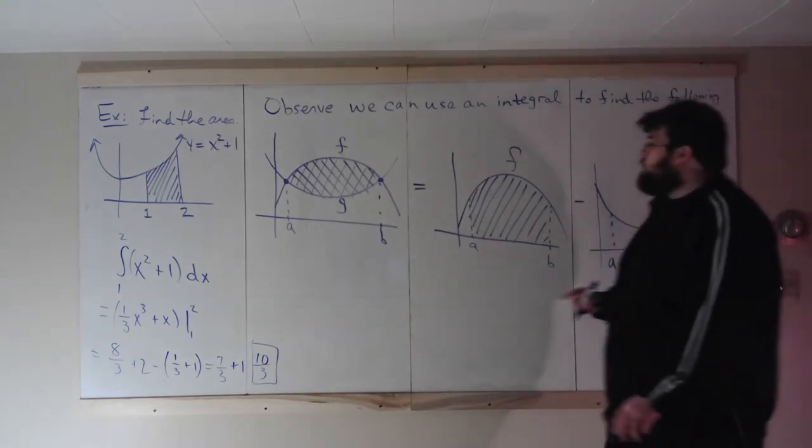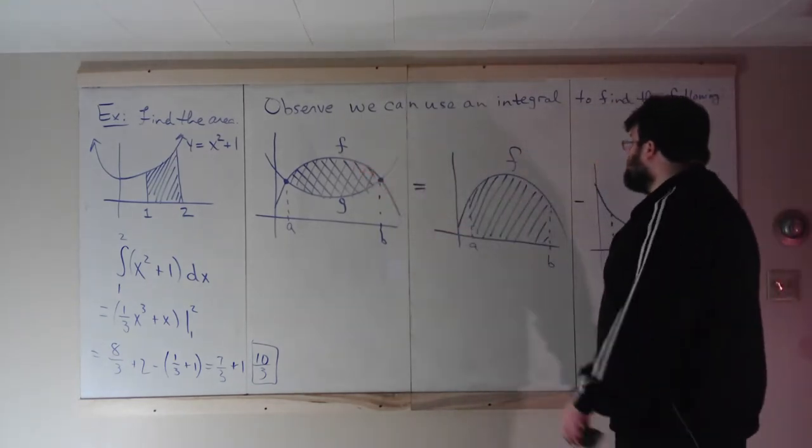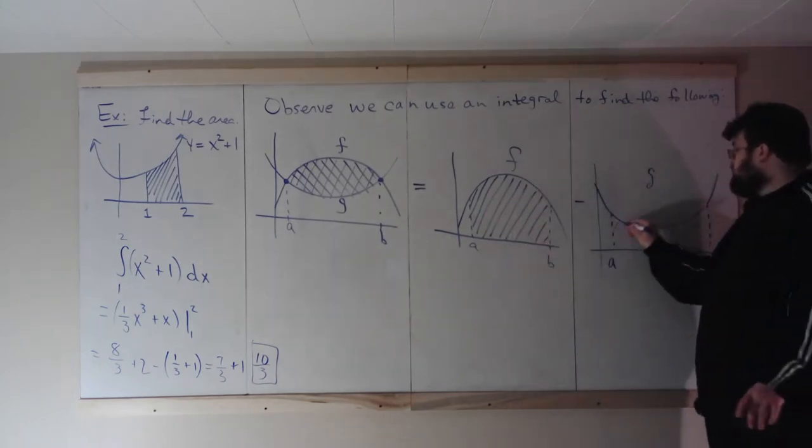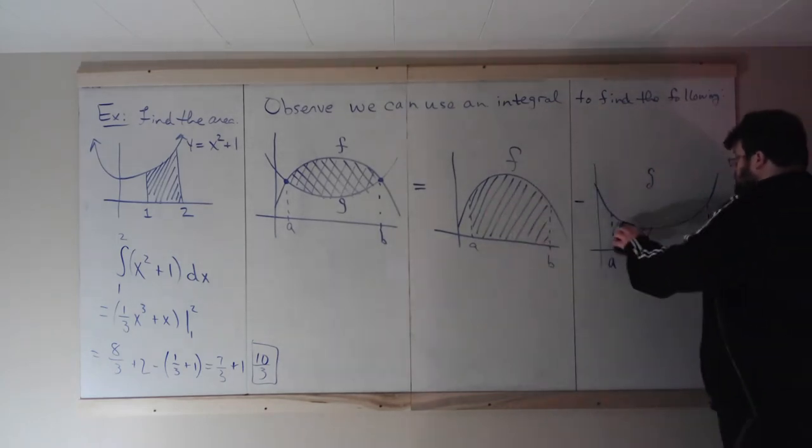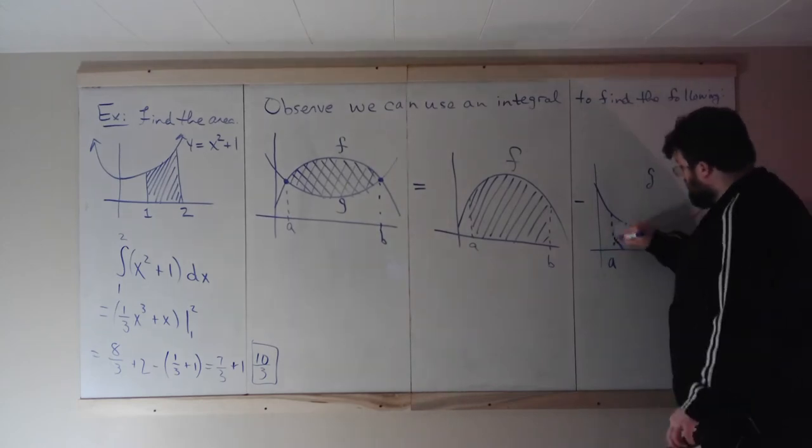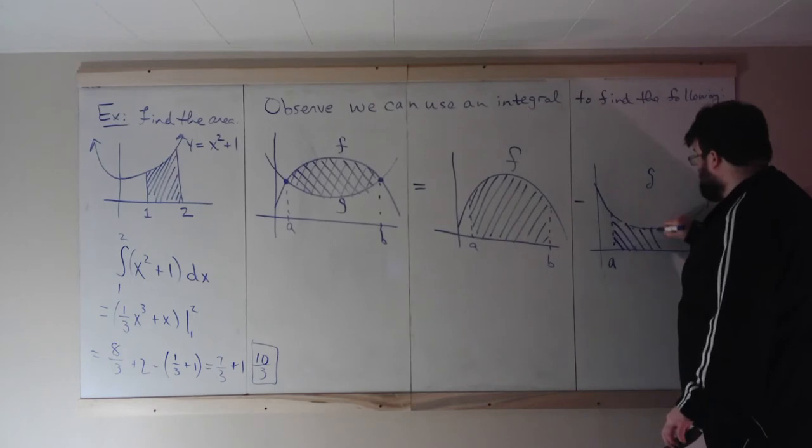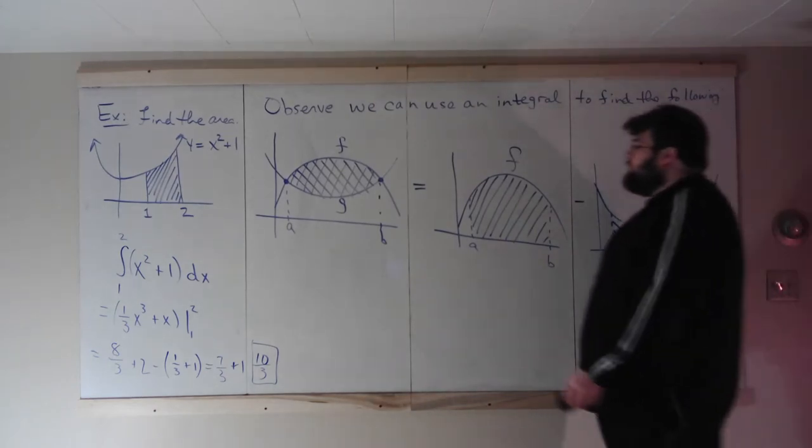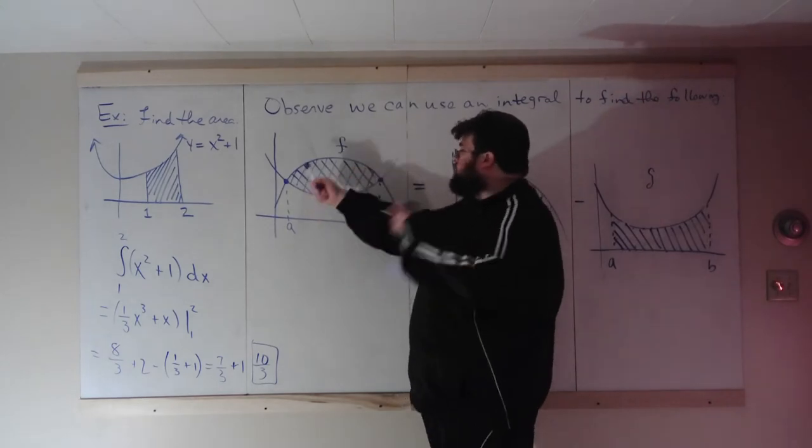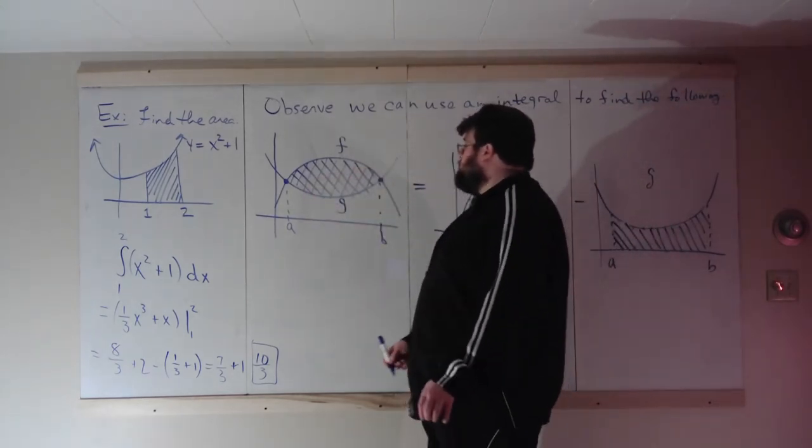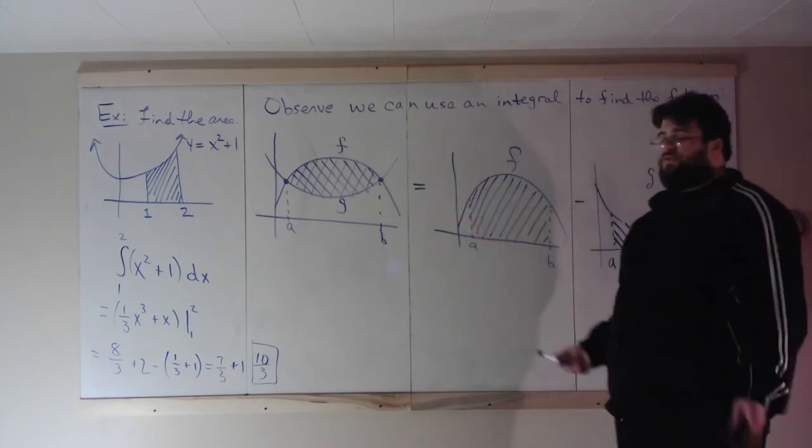This area we want between these two curves is given by this area without this area. You can see in this drawing, if we take the area under F and remove the area under G, we're left with the area between F and G.